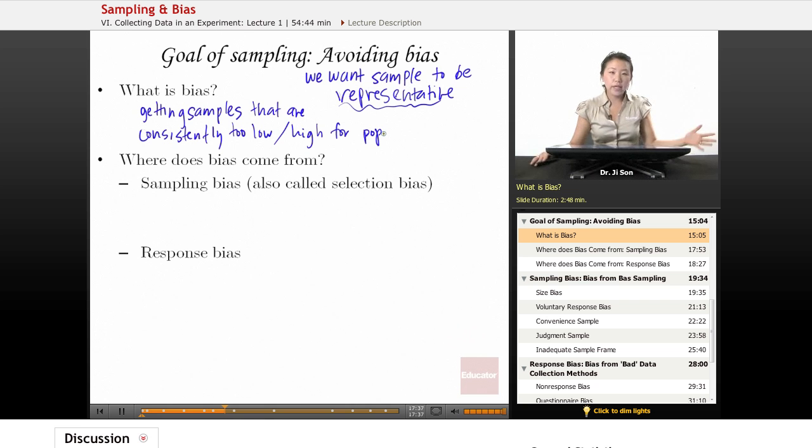What we really want is a sampling method that goes sort of around randomly and takes samples from sort of everywhere, instead of just from one side. So that's what we mean by bias, when the actual method itself is biased.